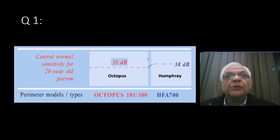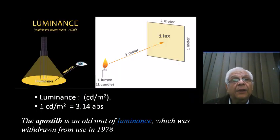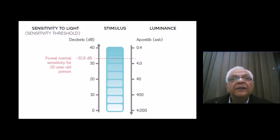Now back to the first question. The central sensitivity in the Octopus is 35, while in the Humphrey is 38. We know that the luminance of a surface is expressed in candles per square meter, an old unit of luminance which was withdrawn from use in 1978. There is an inverse relationship between stimulus luminance and the patient sensitivity to light.